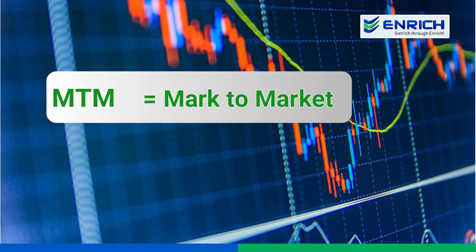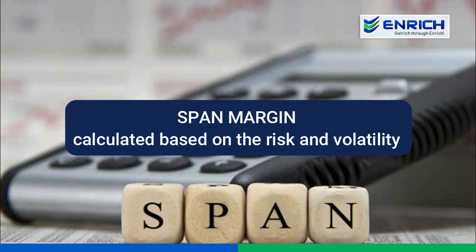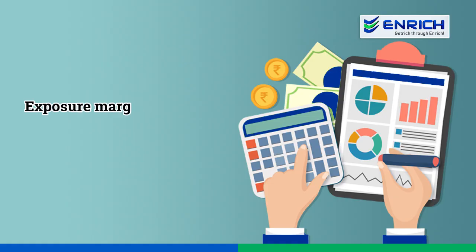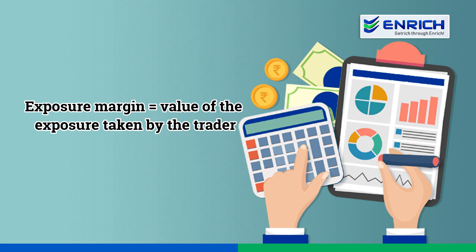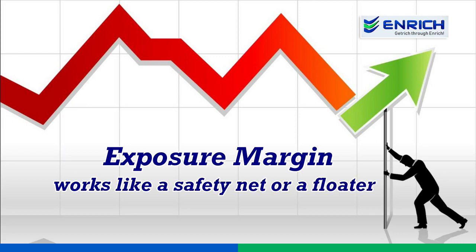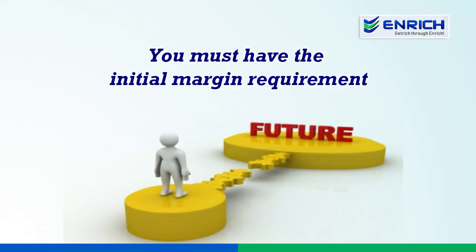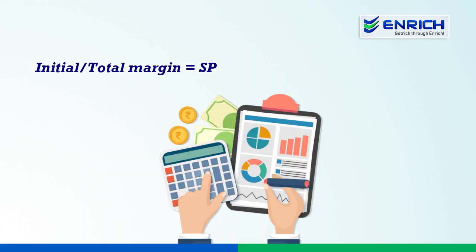Remember, span margin is the initial margin calculated based on the risk and volatility of the underlying, while exposure margin is calculated on the value of the exposure taken by the trader. The span margin for a particular script changes from time to time depending on the volatility of the script, but exposure usually remains the same as it works like a safety net or a floater to protect from possible losses. Span and exposure margins are specified by the exchange. So when you trade in futures as a client, you must have the initial margin requirement. Total margin equals span margin plus exposure margin.